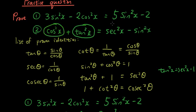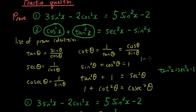cos squared x is on the left but not on the right. So what is the relationship between cos squared x and what's on the right? We've got a sin squared x on the right, and I can turn cos squared x into an expression with sin squared x by rearranging this equation, which gives you 1 minus sin squared x equals cos squared x.